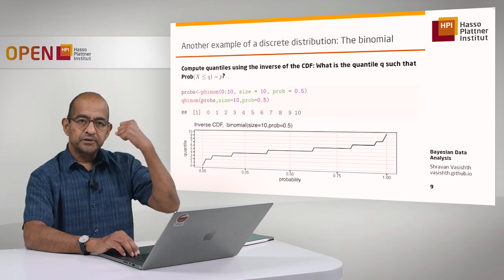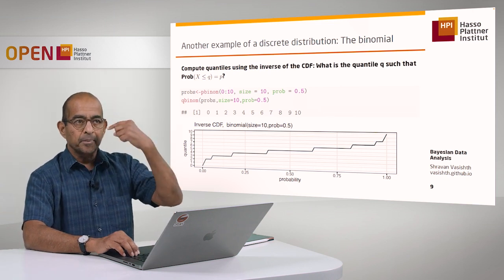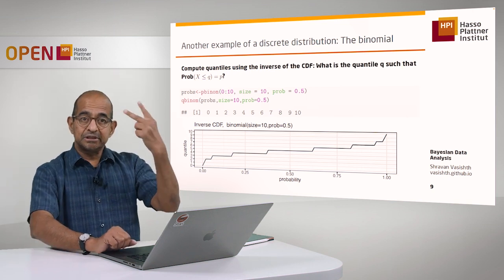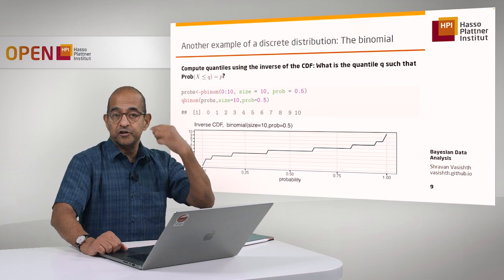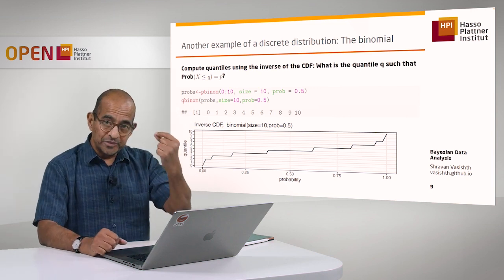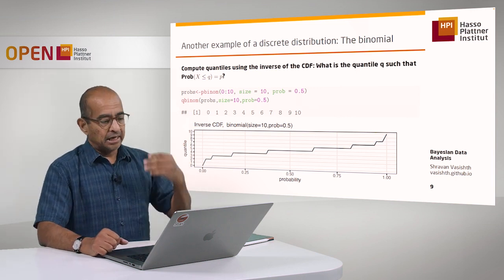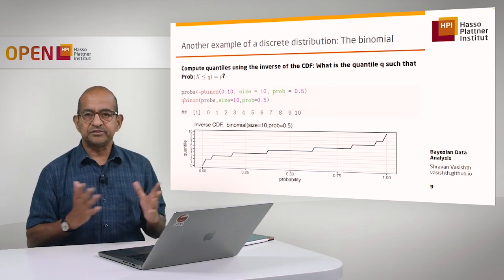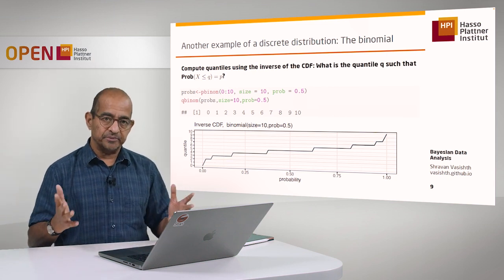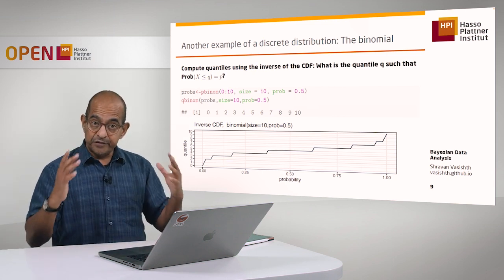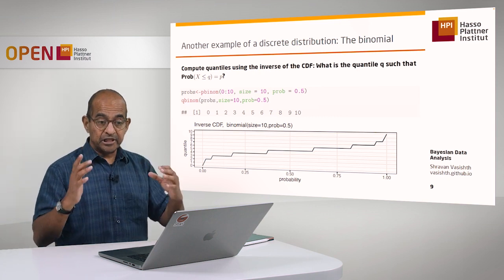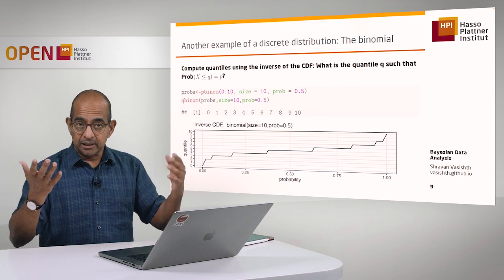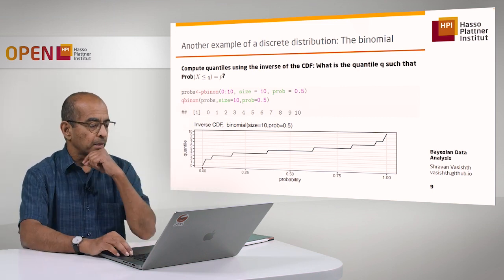Together, the rbinom, pbinom, dbinom, and qbinom functions are called the DPQR family of functions. The cool thing is that they are available for every distribution used in statistical modeling.